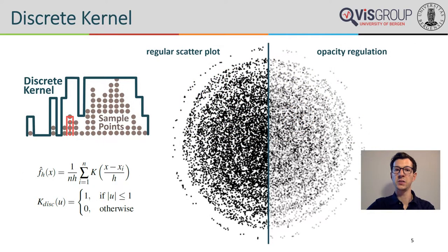The first step is interpreting the data as a discrete phenomenon by depicting the sample points as a conventional scatter plot. We consider the individual points as samples of a probability density function f_h(x) and a discrete kernel function k, applying a kernel function k with bandwidth h and computing the distance from a point x in space to all n sample points x_i of the dataset. If a point in space is close enough to a sample, the kernel returns 1, otherwise 0. The result corresponds to an opacity-regulated scatter plot that allows the user to distinguish between different densities until an opacity threshold is reached.